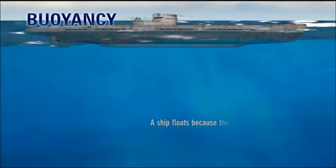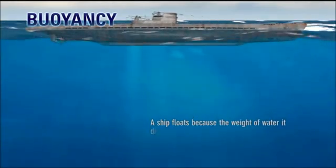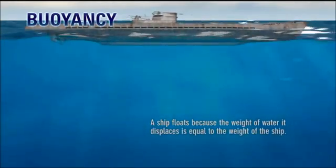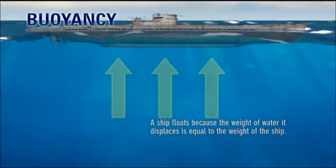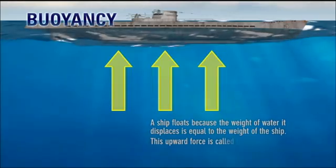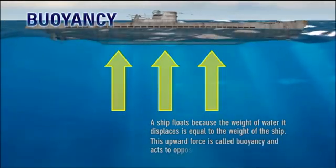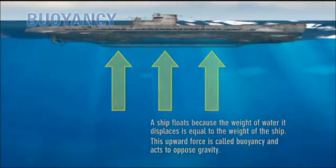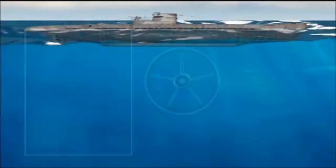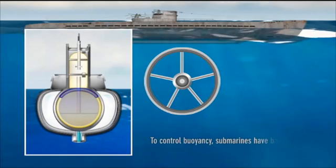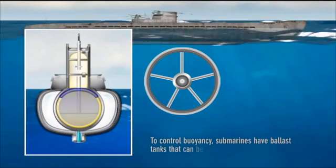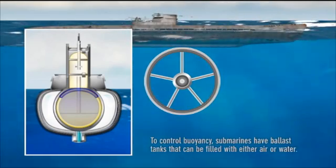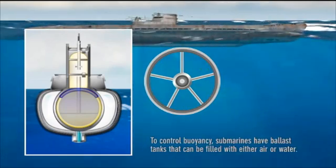A ship floats because the weight of water it displaces is equal to the weight of the ship. This upward force is called buoyancy and acts to oppose gravity. To control buoyancy, submarines have ballast tanks that can be filled with either air or water.